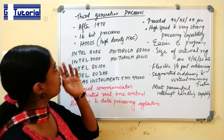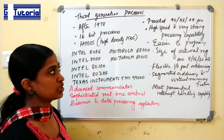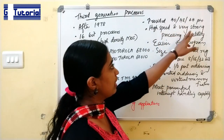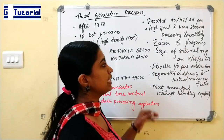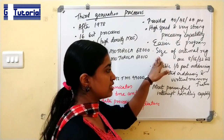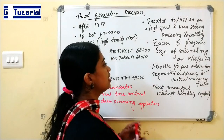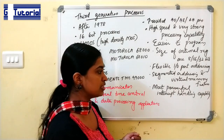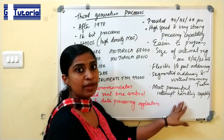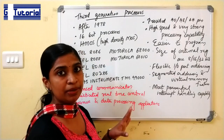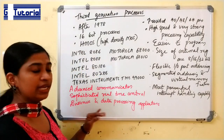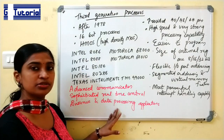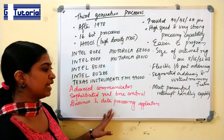Features of third generation processors include 40, 48, or 64 pin ICs, high speed and strong processing capability, easier programming, internal register sizes of 8, 16, or 32 bits, flexible input-output addressing, segmented addressing and virtual memory features, and very powerful interrupt handling capability. They were mainly used for advanced communication, sophisticated real-time control, and business and data processing applications.